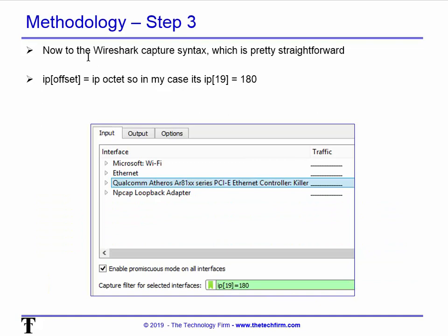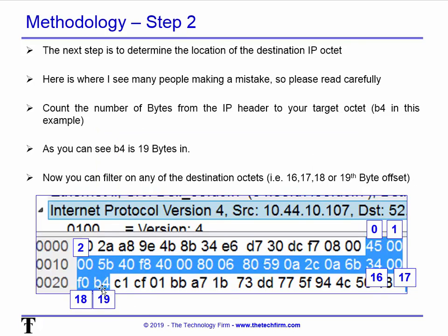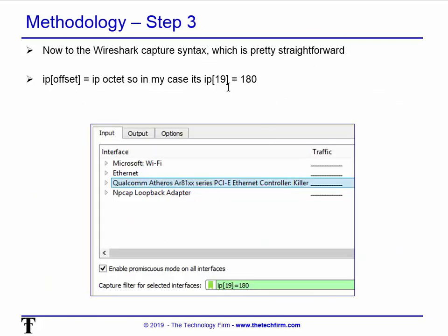Now into the Wireshark capture filter syntax. The capture syntax is different from the display filter syntax — it's really important not to mix the two up. People who see one equal sign and expect two equal signs — that's display filter syntax. This is capture filter. The syntax is simply "ip[19]" — square brackets open and closed — with 19 as the offset byte for that last octet, the 180. You can change that to whatever position you want, or include source as well. Make sure you pick your adapter — in this case it's the ethernet adapter — and the background will go green if you've typed it correctly, or a salmon-pink red if it's not correct.